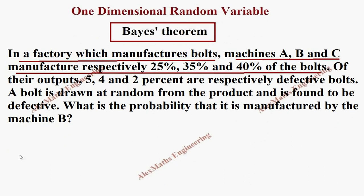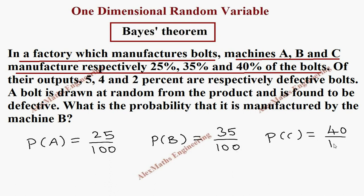So, we can write their probability: P(A) which is 25 by 100, P(B) which is 35 by 100, P(C) which is 40 by 100.